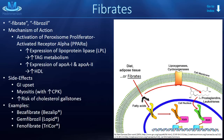The fibrate binds the receptor, causing it to move into the nucleus. Once there, PPAR-alpha binds another receptor called the retinoid X receptor, and that complex binds DNA on sequences called peroxisome proliferator hormone response elements. These response elements drive expression of proteins involved in fatty acid and triacylglyceride metabolism — for example, increasing lipoprotein lipase expression, which increases triacylglyceride metabolism. It also increases expression of apolipoprotein A1 and A2, lipoproteins important in the structure of an HDL particle.